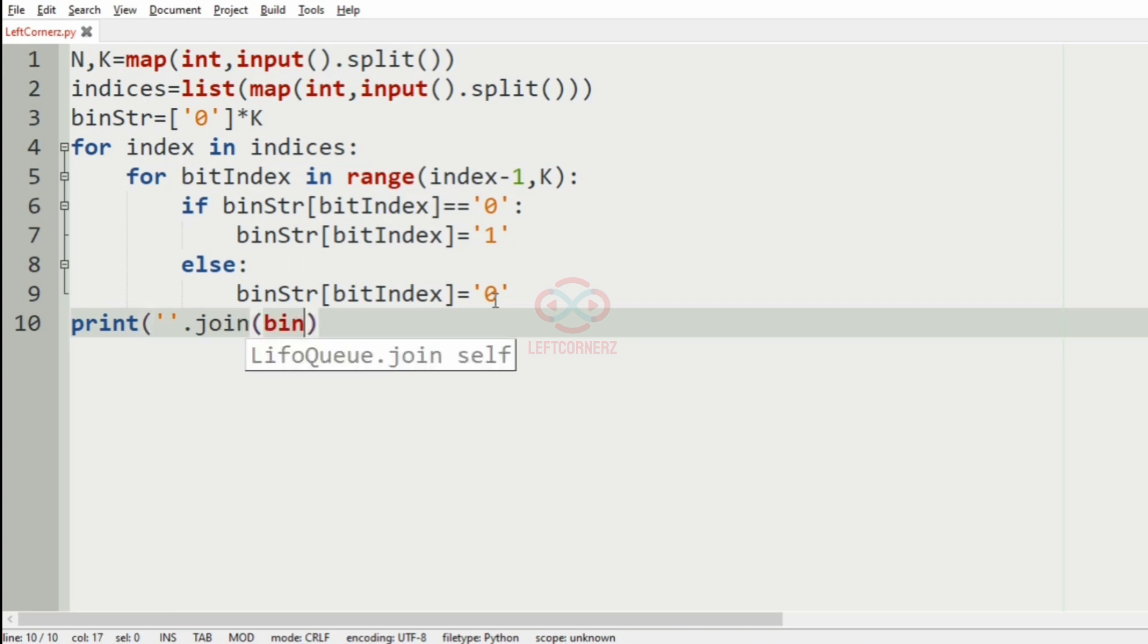And now finally we have to print the decimal equivalent. So for that we have dot join, first we'll join them, that is the binary string. So we'll convert them into int.